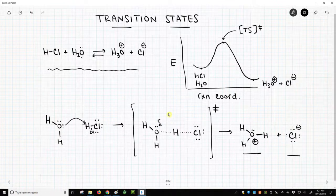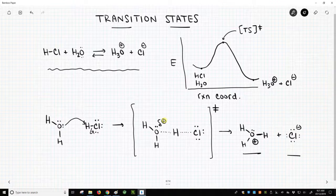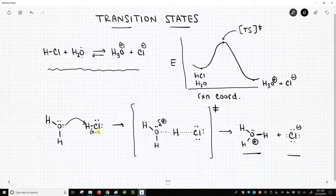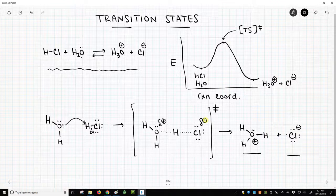That's supposed to be a Greek delta. And that's going to be plus because that oxygen is halfway between neutral and plus. So it's going to be partial plus. And this chlorine is going to be halfway between neutral and minus. So it's going to be partial minus. And that's how we draw a transition state.